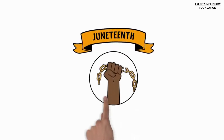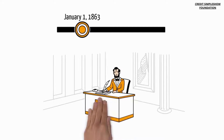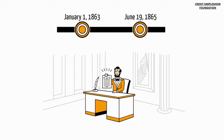We explain the history of Juneteenth. On January 1st, 1863, President Abraham Lincoln issued the Emancipation Proclamation, abolishing slavery. But it would take more than two and a half years for freedom to reach every state.